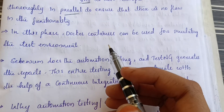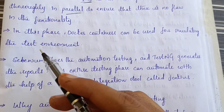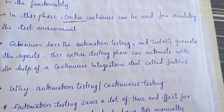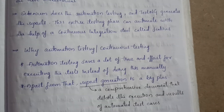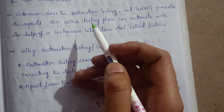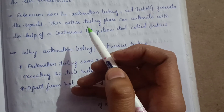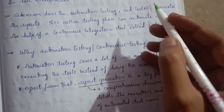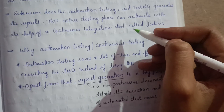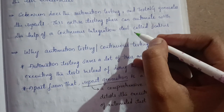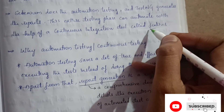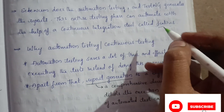In this phase, Docker containers can be used for simulating the test environment. The Selenium tool performs automation testing, and after that, test reports are generated by the TestNG tool. This entire testing phase can be automated with the help of continuous integration using Jenkins.